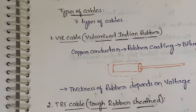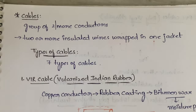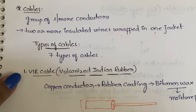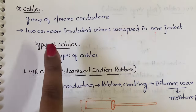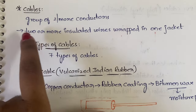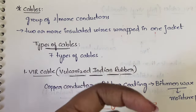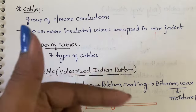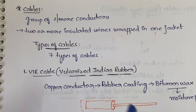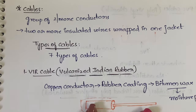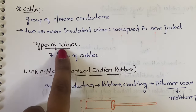Now let us discuss cables. Cables means a group of two or more conductors — in wires we have only one conductor, but here we have two or more insulated wires wrapped in one jacket. The insulation around the wire can be rubber, metal, lead, or any coating.